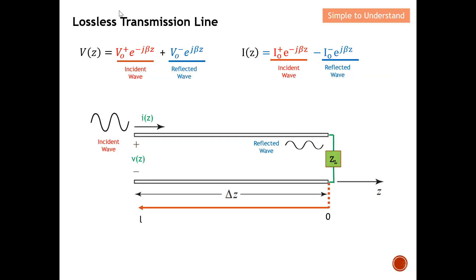Let's do a quick revisit of the lossless transmission line, which I discussed in the Part 7 series. To find the voltage at any point on the transmission line, you sum the incident wave plus the reflected wave. For current, since the reflected current moves in the opposite direction, it is the incident wave minus the reflected wave, giving you the overall current at any point on the line.